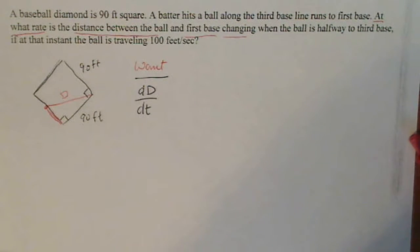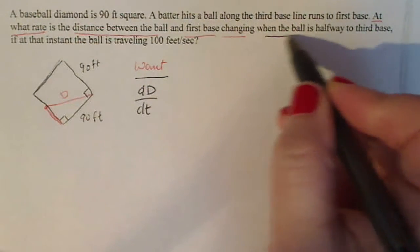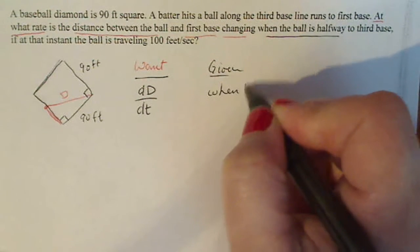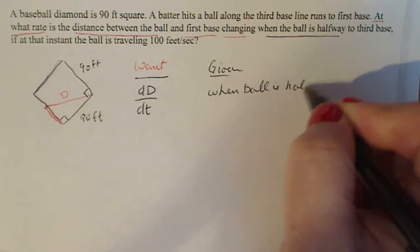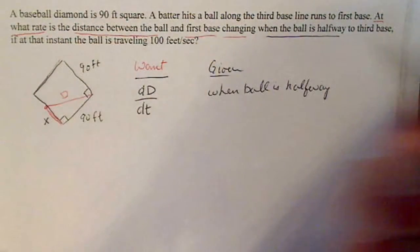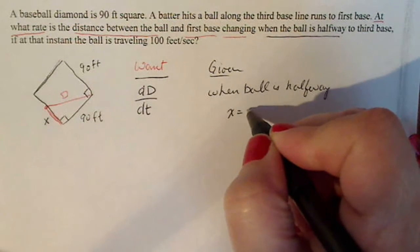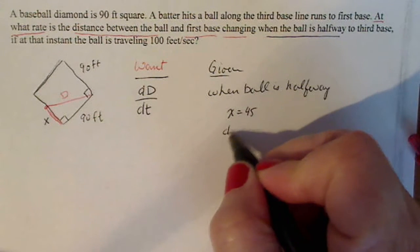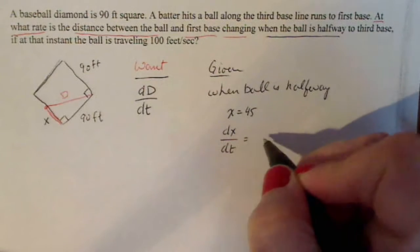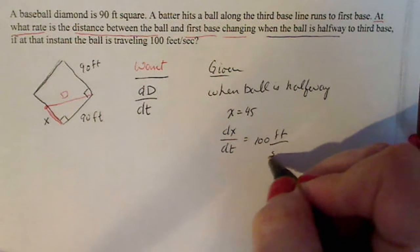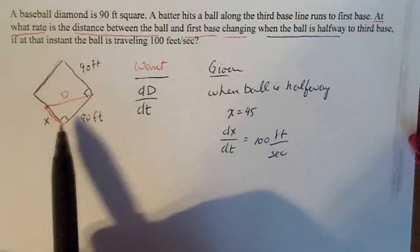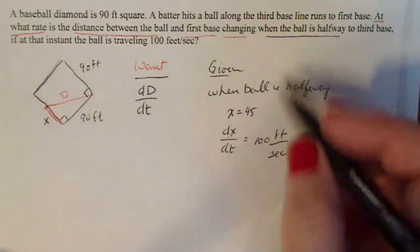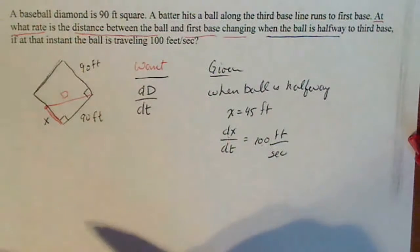Given the information, when the ball is halfway to third base, I'm going to call that distance X because I don't know what it is. I'm going to find dD/dt when X is 45, and dX/dt is 100 feet per second. The ball is traveling 100 feet per second, and this is 45 feet — everything here is in feet.